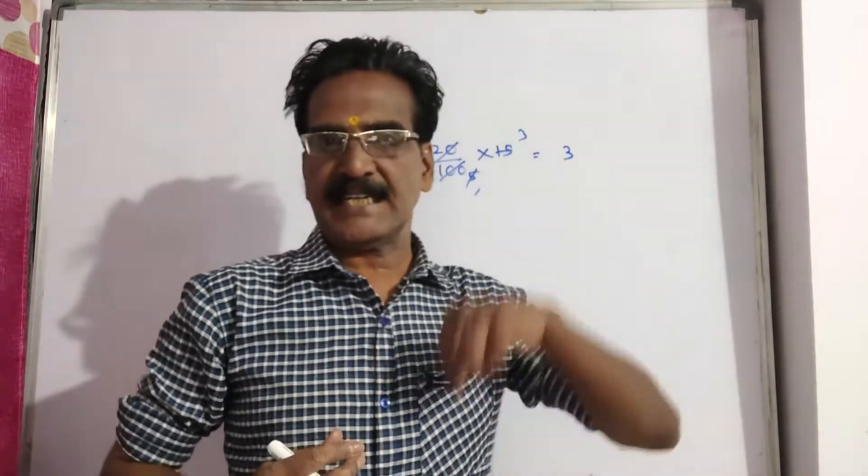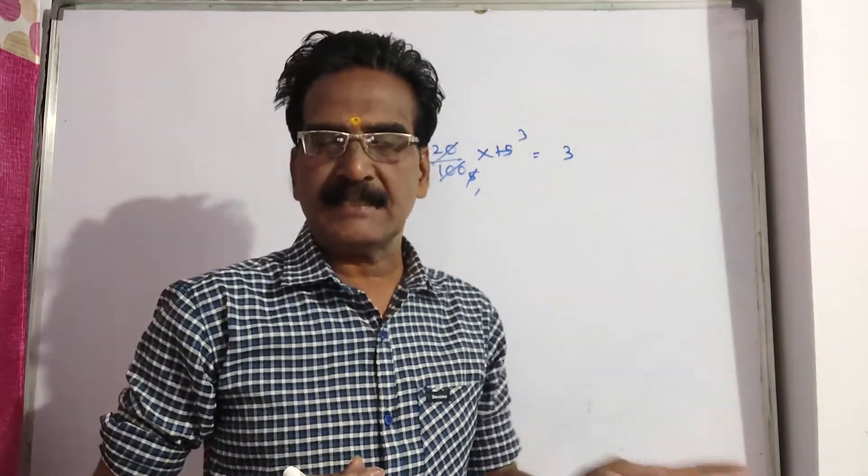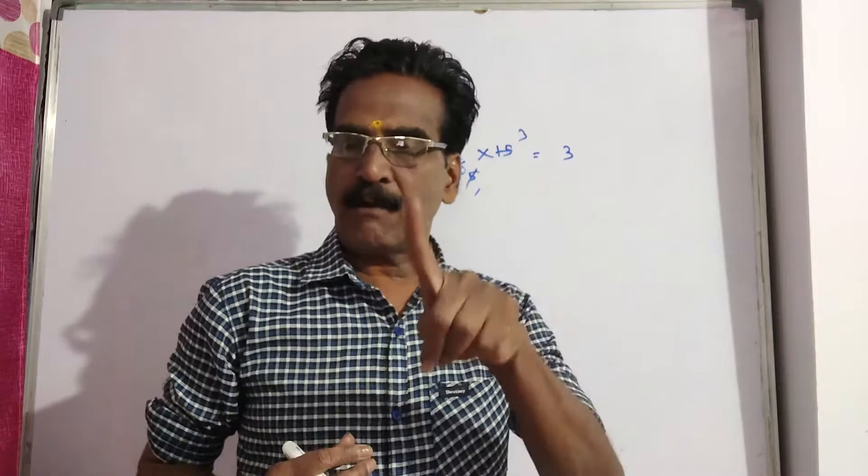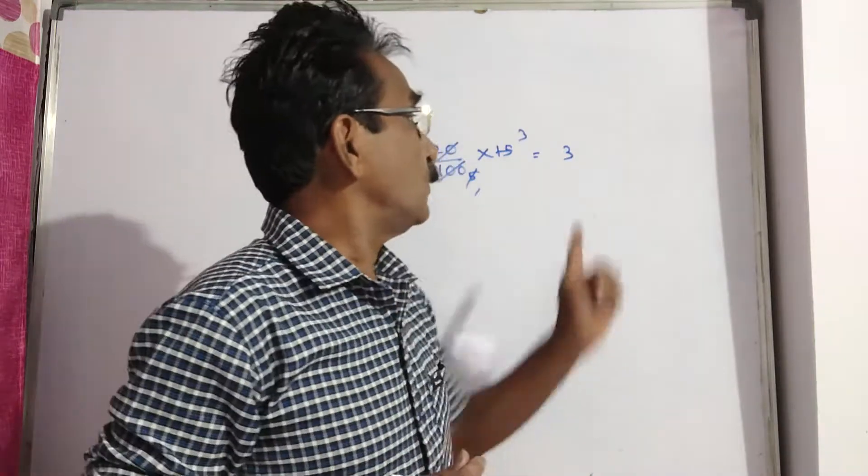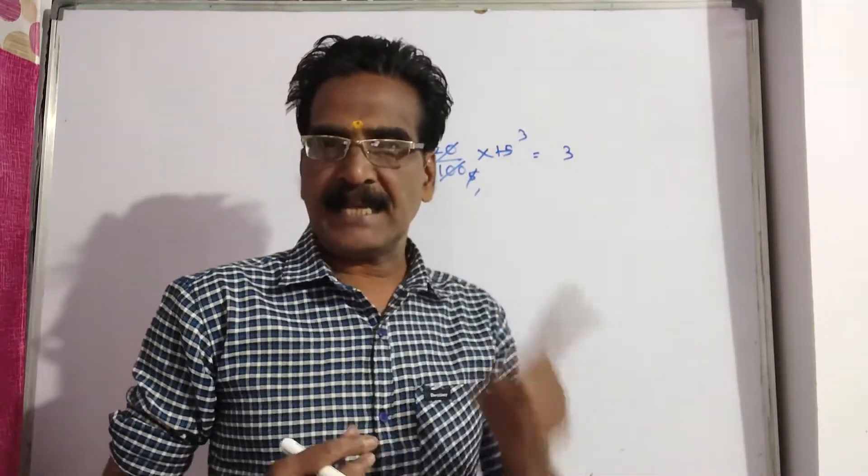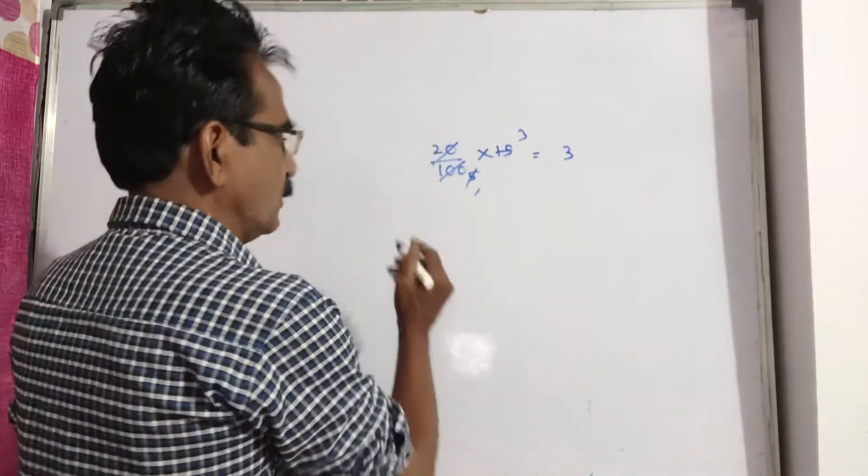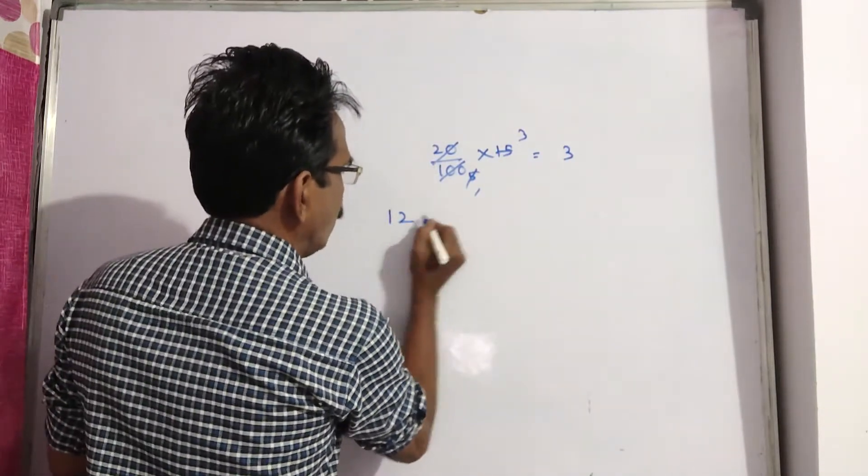Because of this reduction, a man gets 12 mangoes more. So the 3 rupees must be the price of 12 mangoes.